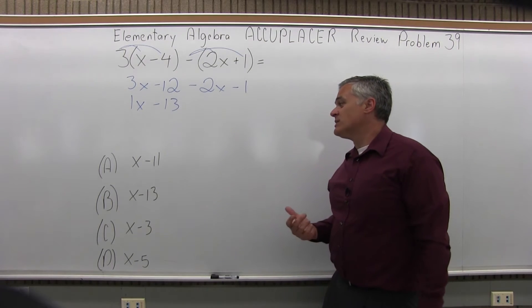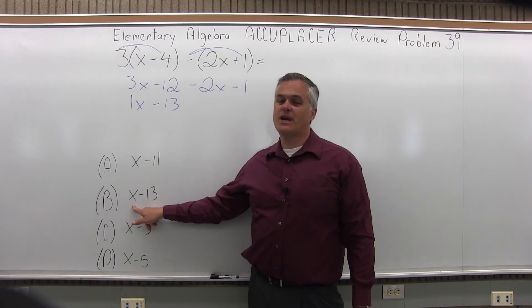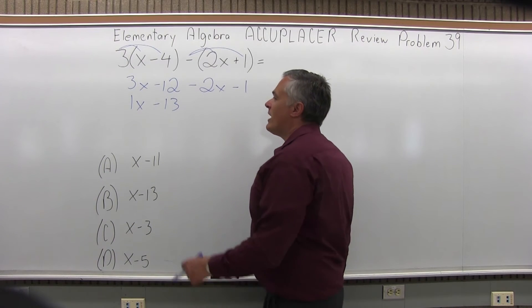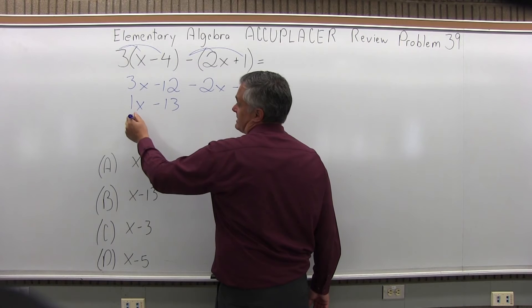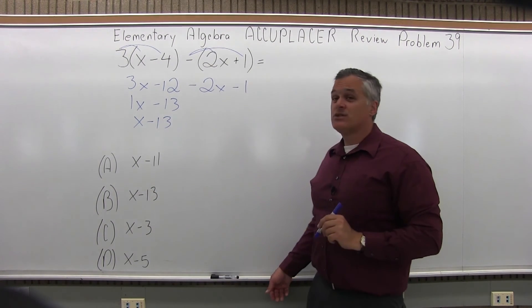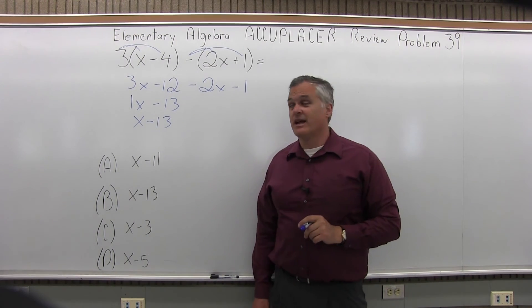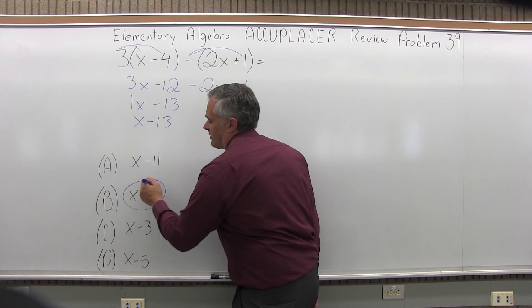Now I have an answer of 1x minus 13 which is very close to option B which is x minus 13. In fact it is the same thing. When you have a 1 in front of your variable you can write it such as 1x or you can just let it go and leave it x. So my answer 1x minus 13 is equivalent exactly to x minus 13 which is option B for number 39.